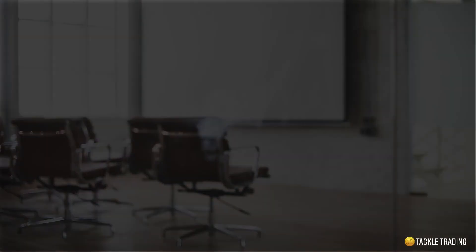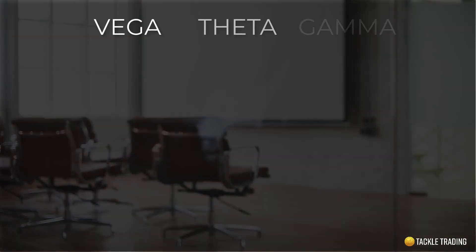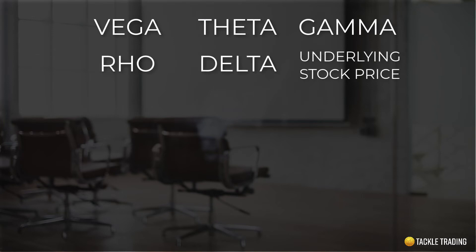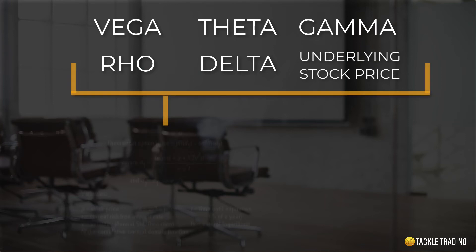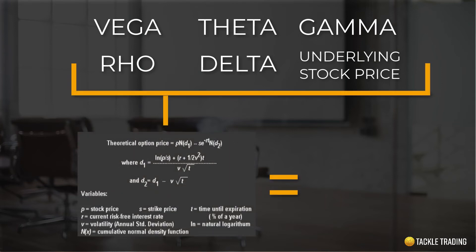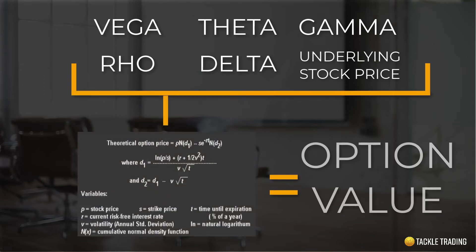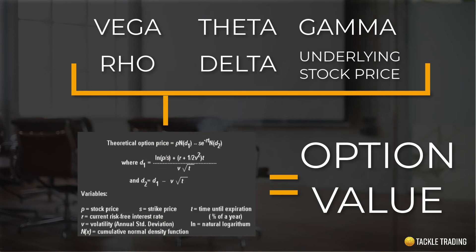And there you have it, ladies and gentlemen — the Vega, the Theta, the Gamma, the Rho, the Delta, the stock price — all of these variables that we've been learning about in the Black-Scholes model and the Option Greeks. We now have a pretty clear understanding of all of them and how they get put into the options pricing model, where supply and demand spits out that options value in real time.